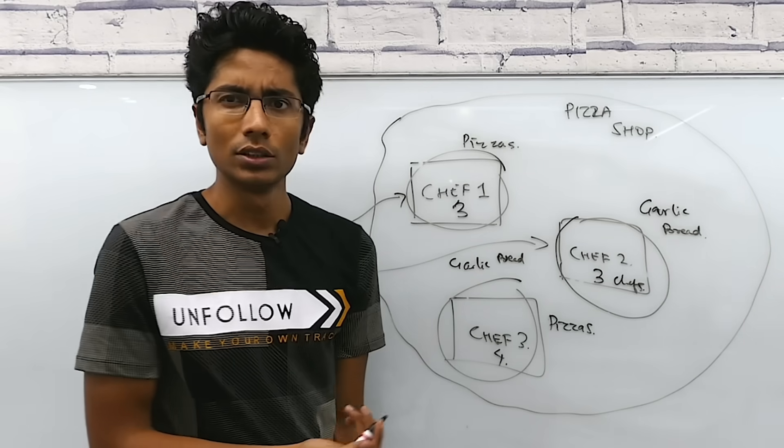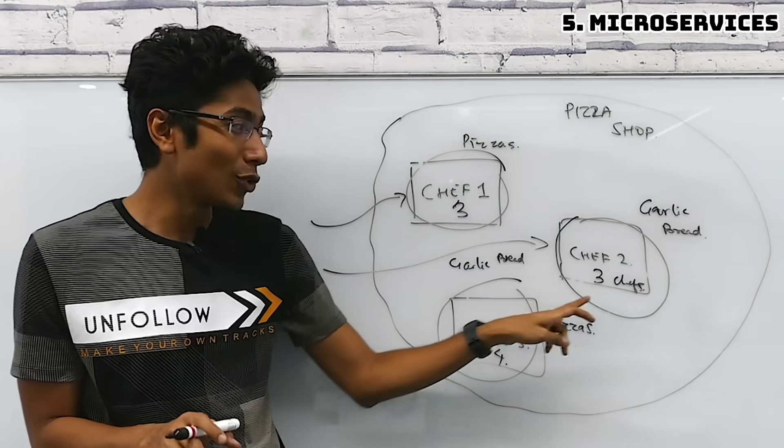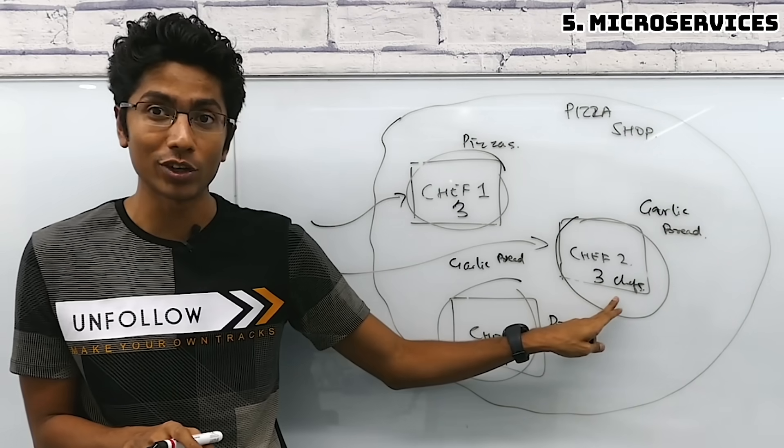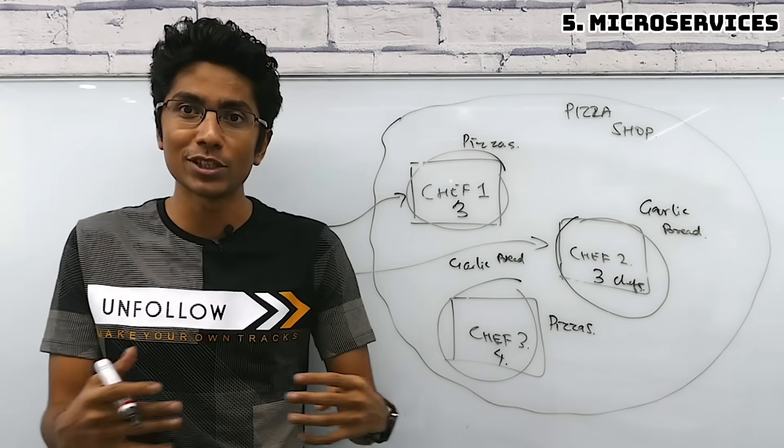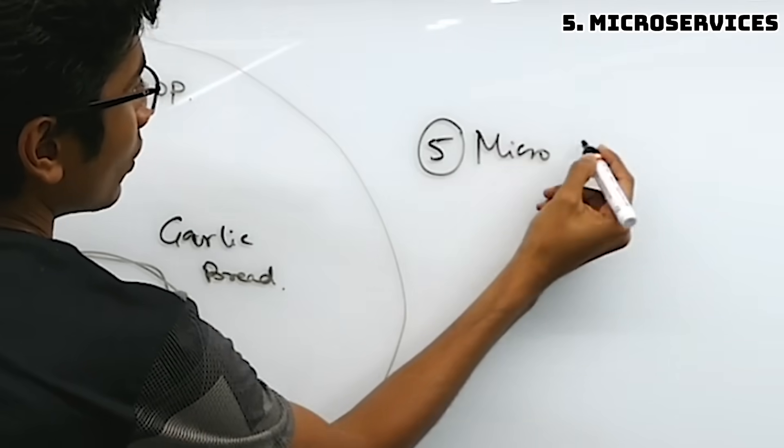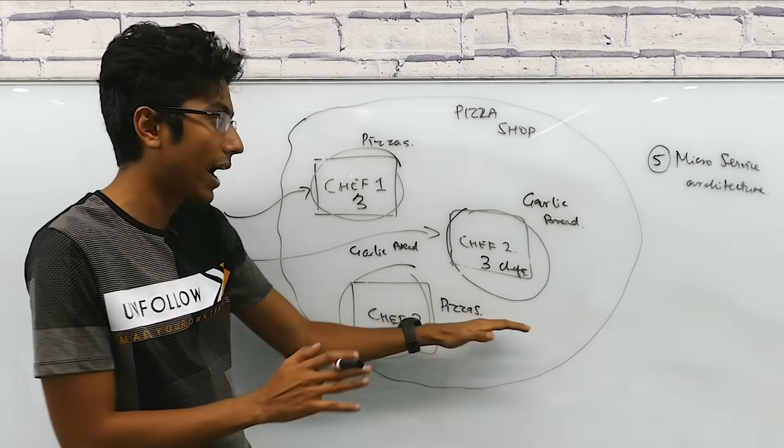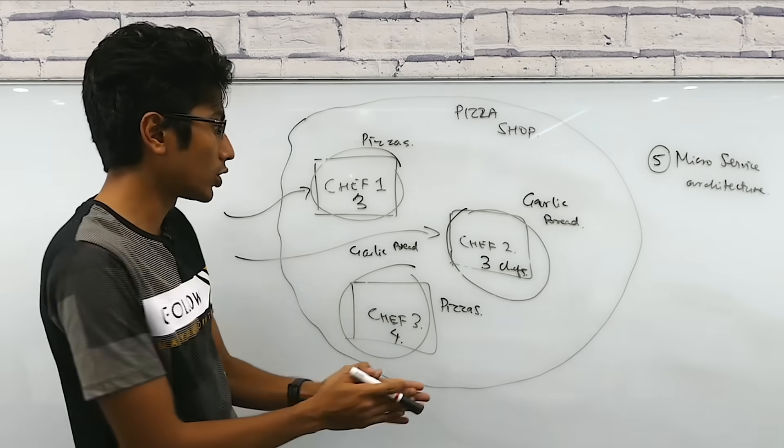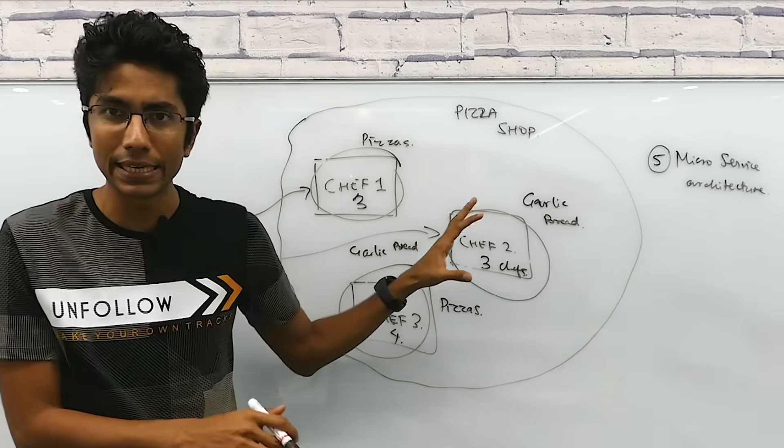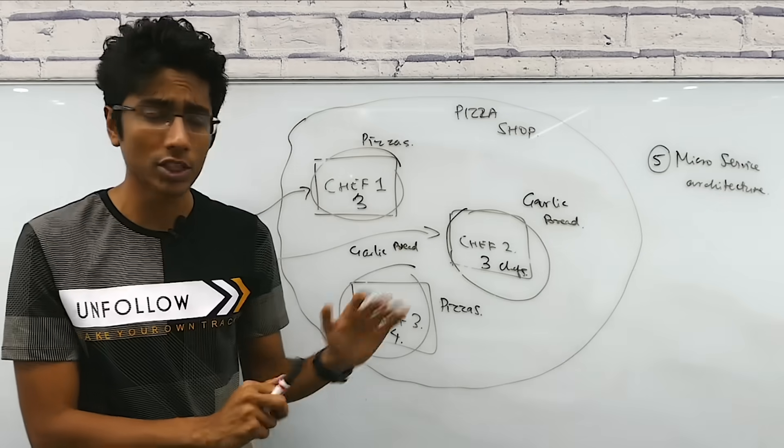So we have something called a microservice architecture. You have all your responsibilities well defined over here. There's nothing outside your business use case that you handle. So that is point number five. At this point, your pizza shop is actually doing really well because it's able to handle all orders within time. And it also has specialists for everything which you can scale easily. This business is scalable to a large extent.